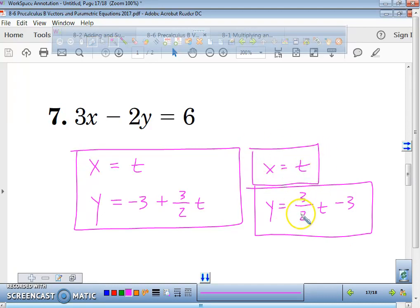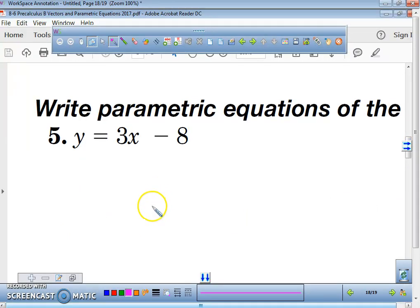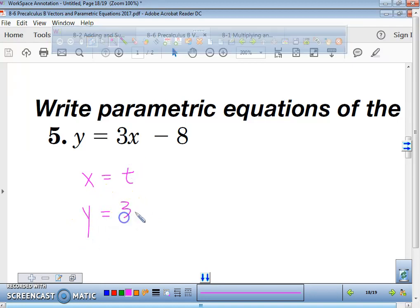So for every single problem, on problems 5 all the way through 8, you will always start out with x equaling t. Then just plug it in and solve the line. Say x equals t. y equals 3t minus 8. See how easy that is? This one, you didn't really have to solve for y. y was already solved for you.